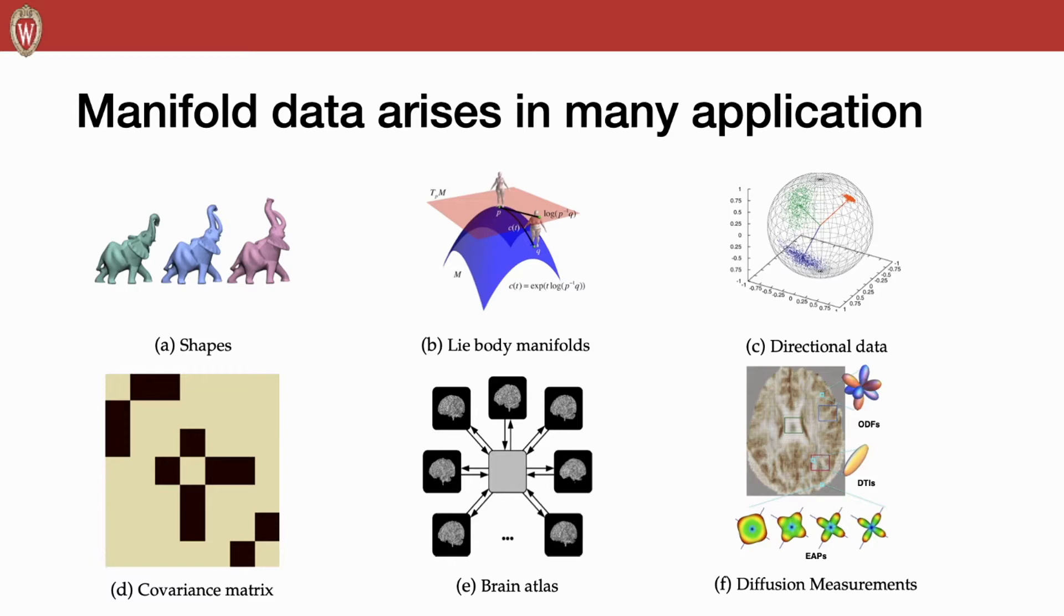And the diffusion of water molecules in brain images is represented by structured measurements, such as diffusion tensor imaging (DTI) and orientation distribution function (ODF).